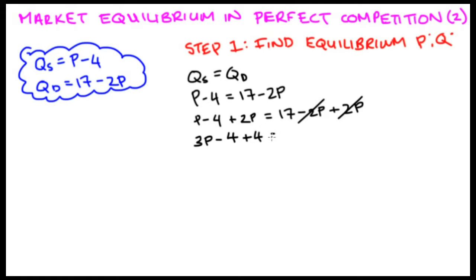Then I'm going to plus 4 to both sides to get rid of that negative 4 on the left hand side. So I get 3P minus 4 plus 4 is equal to 17 plus 4. This means that 3P is equal to 17 plus 4, which is 21. I can divide both sides by 3 in order to get rid of that 3 that's multiplying P, and I get 21 divided by 3 is equal to 7. 3 divided by 3 is equal to 1. So our P star is equal to 7. This is our equilibrium price.